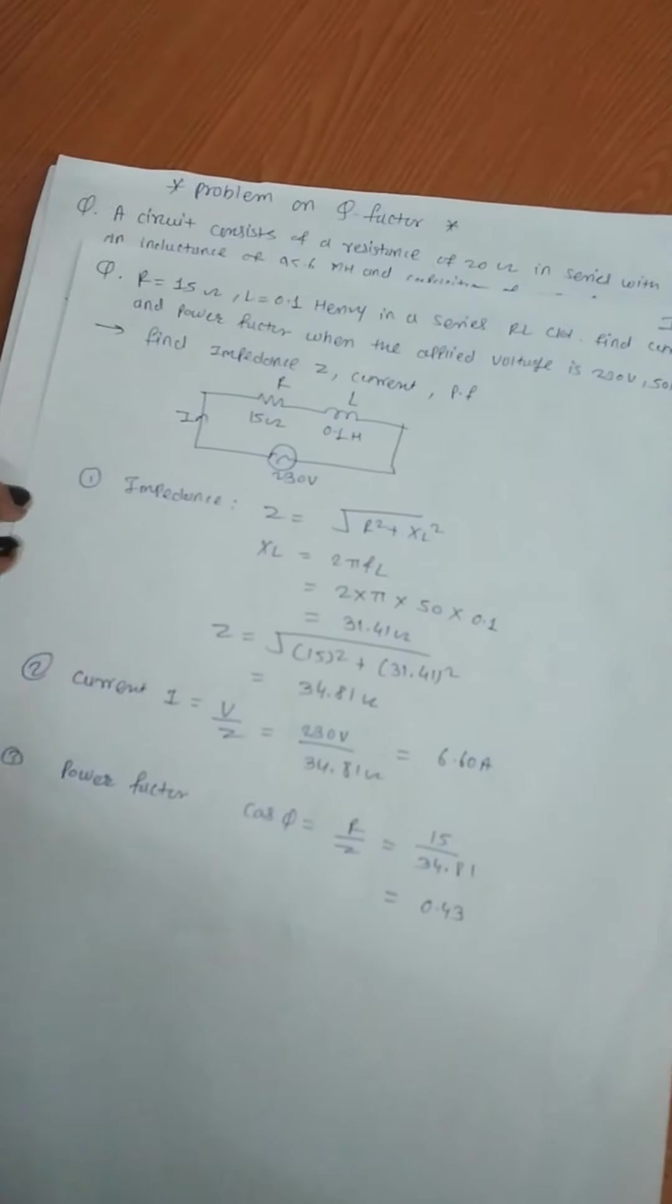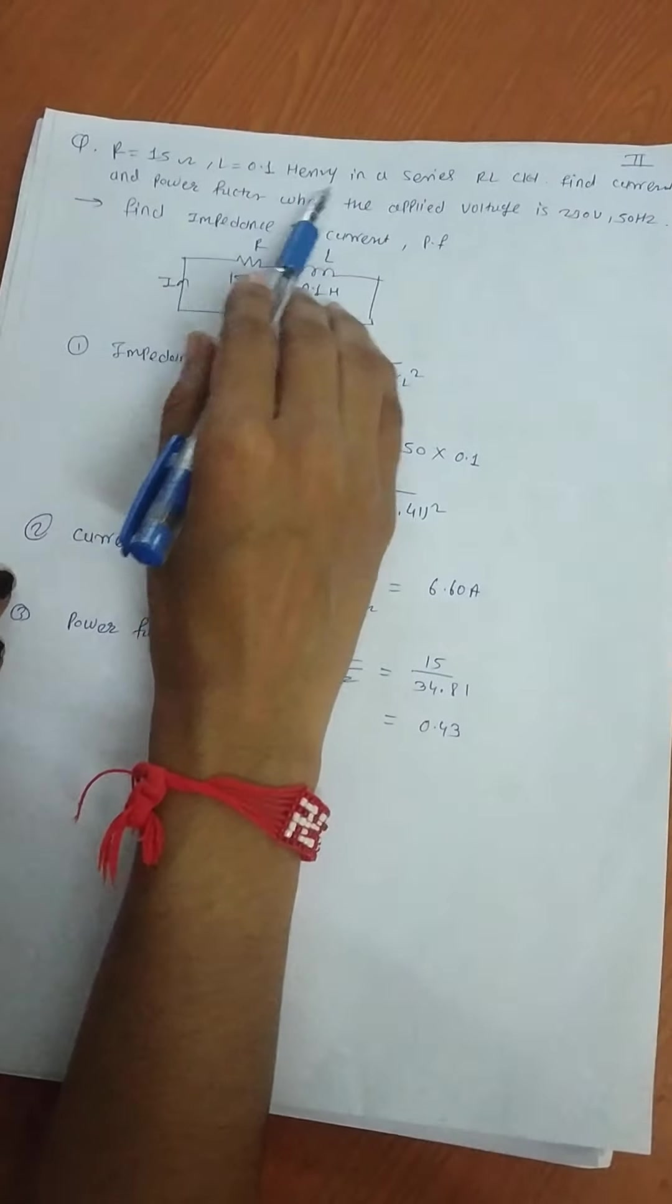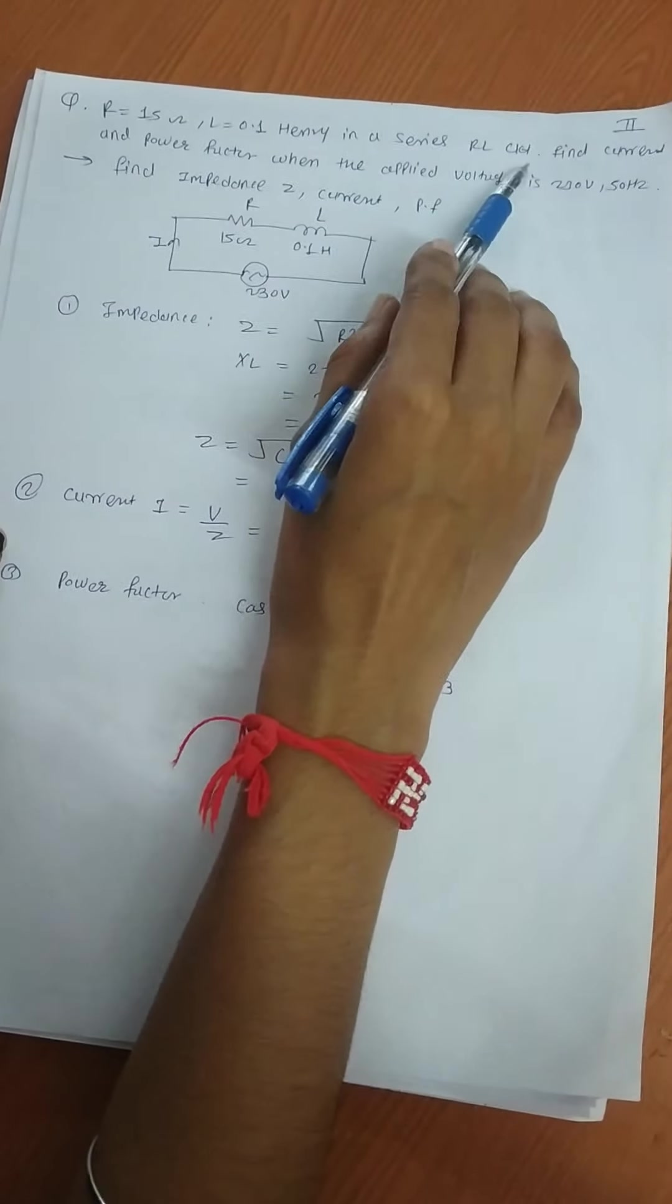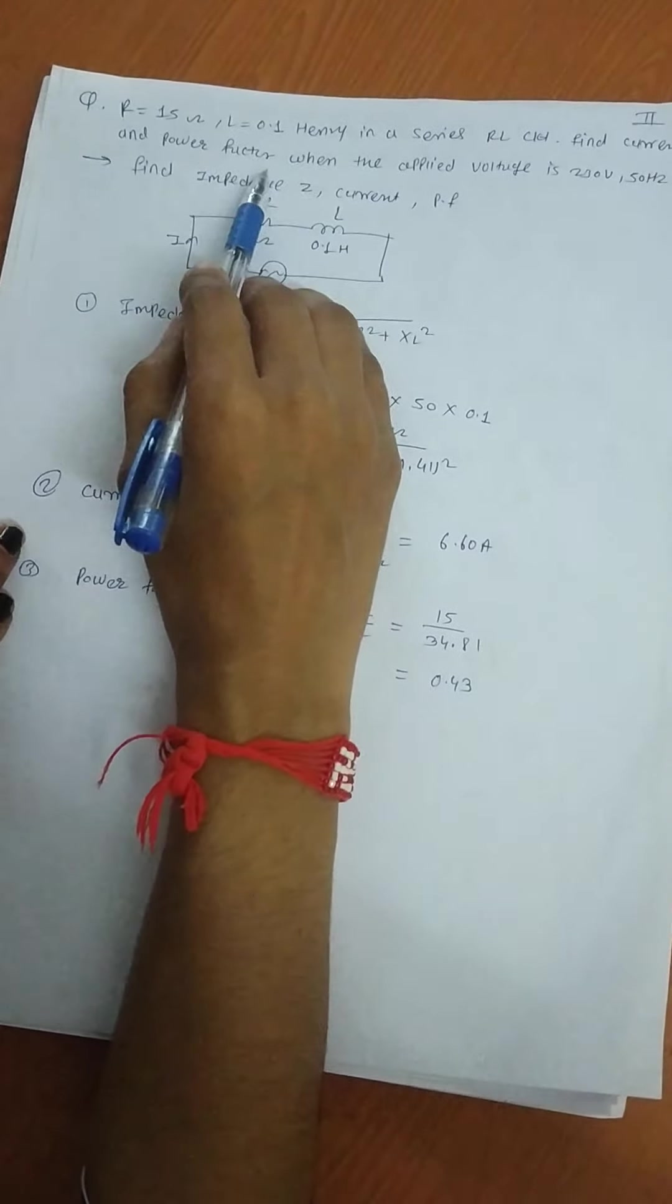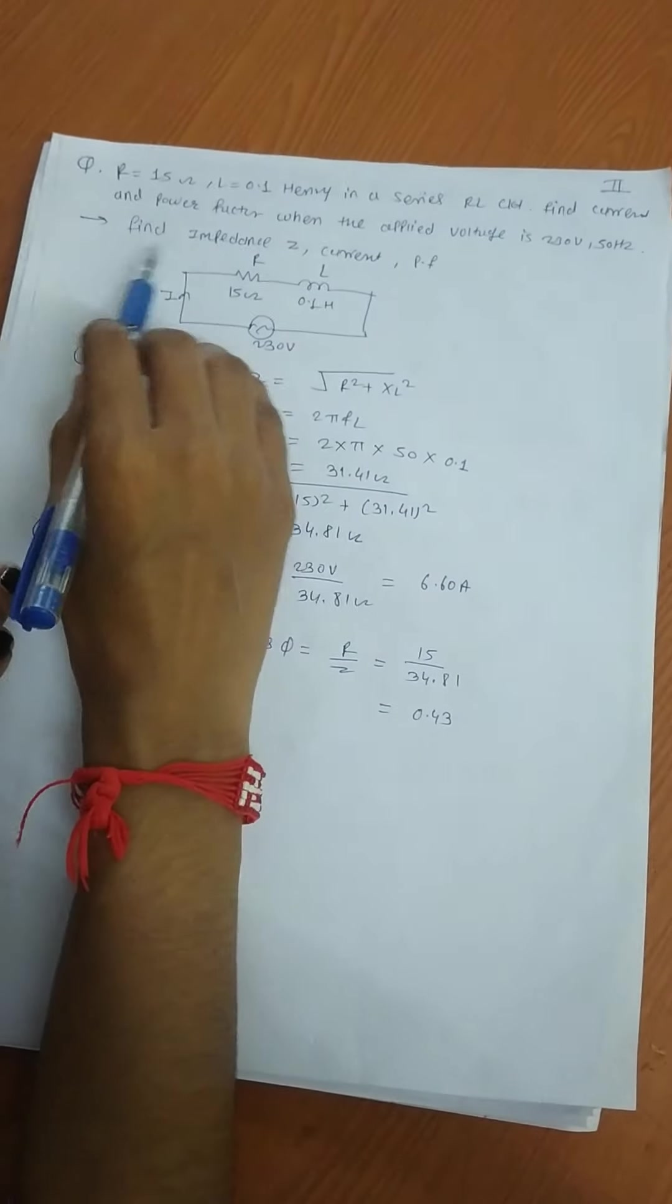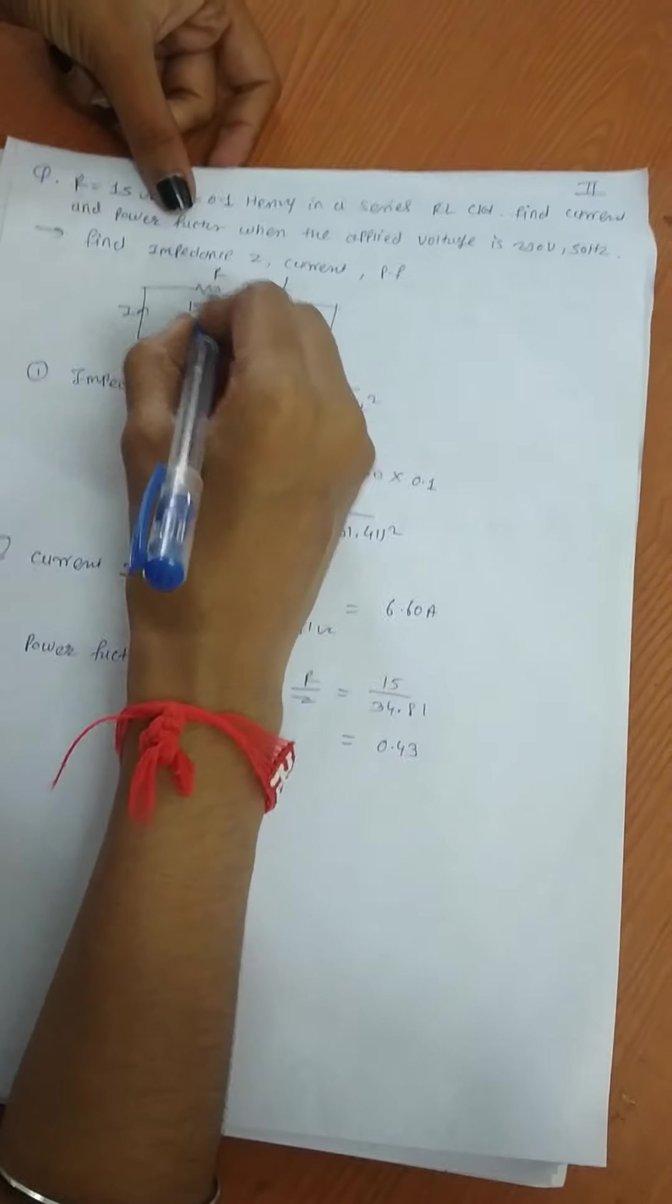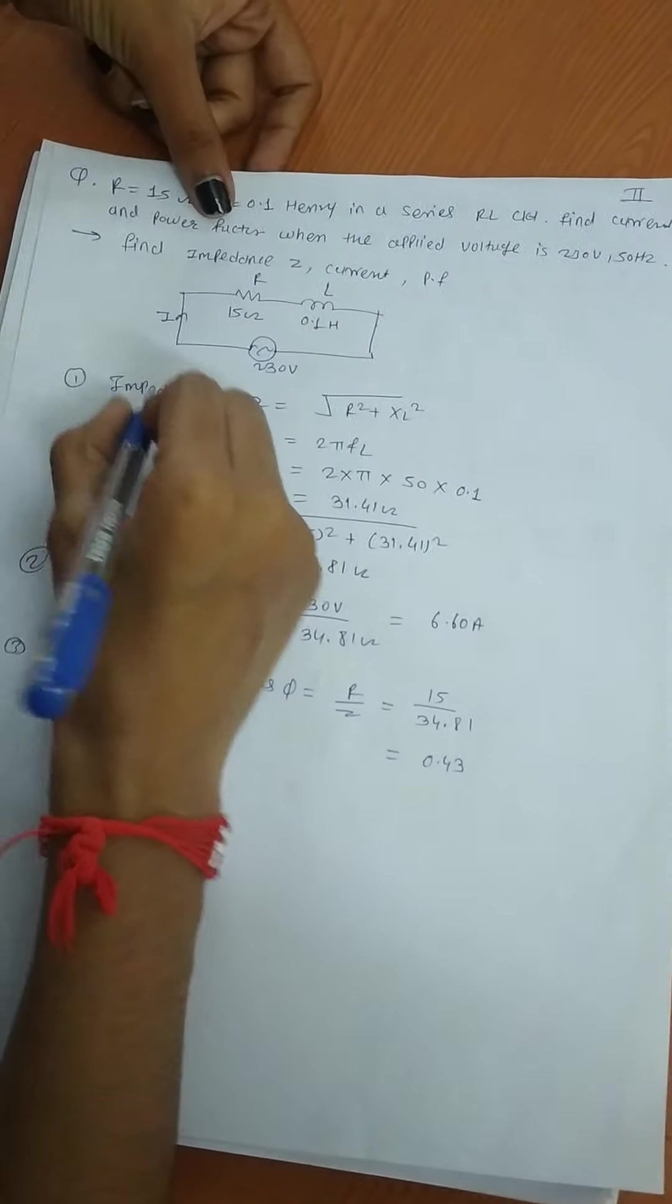Next problem: Given resistance 50 ohm and inductance 0.1 Henry in a series RL circuit, find the current and power factor when the applied voltage is 230V, 50 hertz. Find impedance, current, and power factor. First, draw the RL circuit and find impedance.